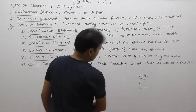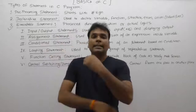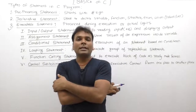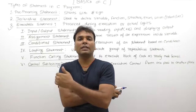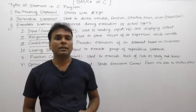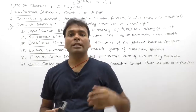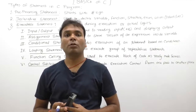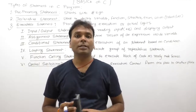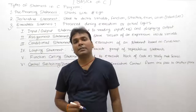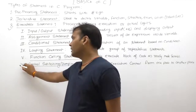Executable code is created only for executable statements. Executable statements are the actual logic of our programs — they are used to solve problems. The actual code written to solve problems is considered as executable statements. Based on types of operations, executable statements are divided into six different categories.